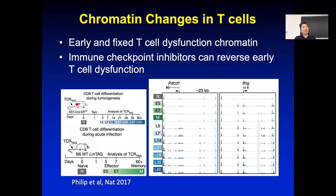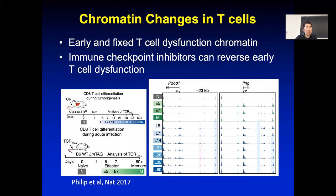Recently, people are also starting to look at T cell function by examining chromatin changes. In a mouse model, you can have a tumor implanted and look at how it grows over time — five days, 14 days, 28, 60 days. Initially the immune system tries to reject it, but over time it will no longer reject. You can also use a viral infection model where mice have an acute immune response initially, but after many days develop a chronic immune response that looks similar to a long-established tumor.